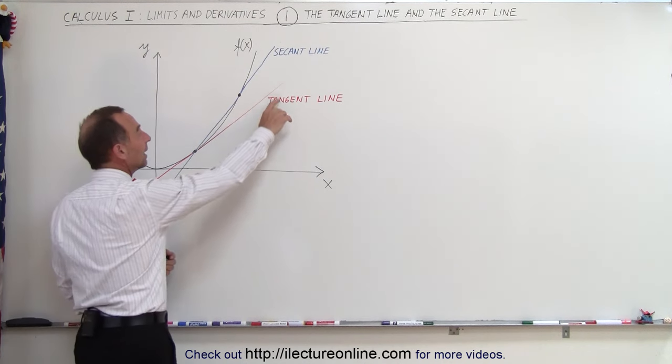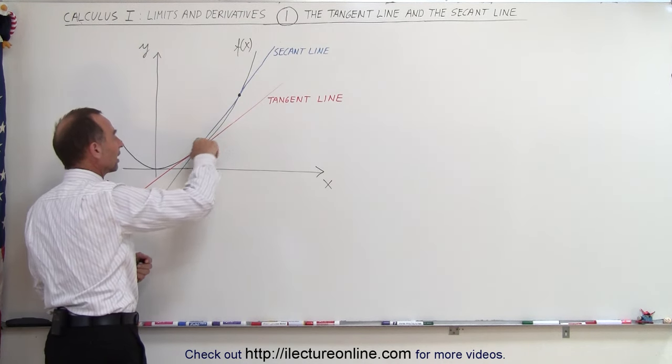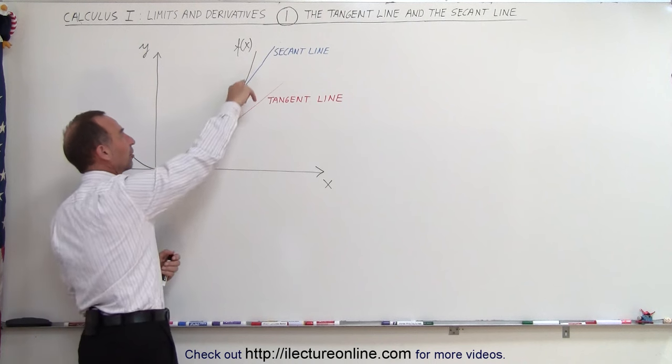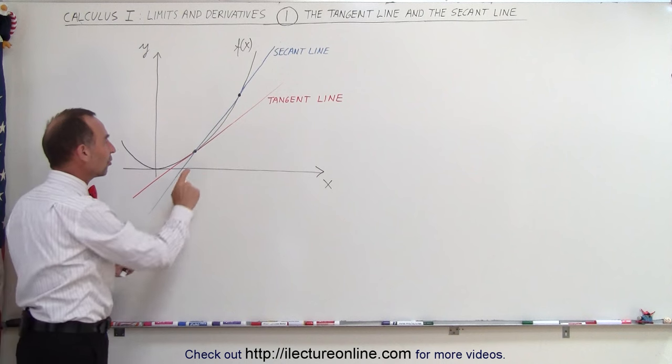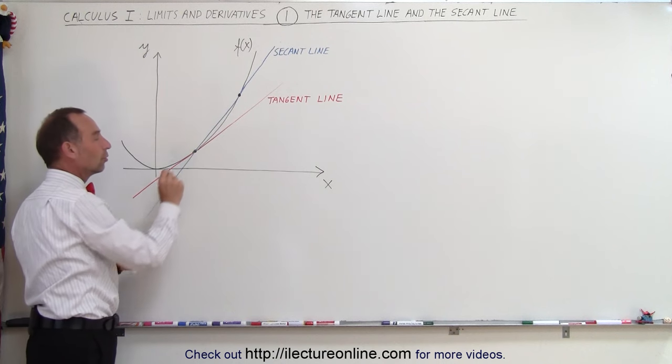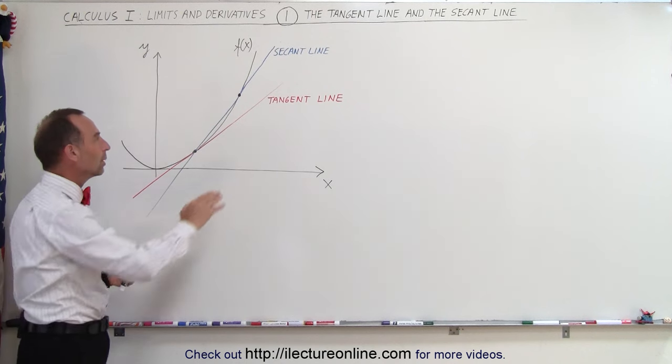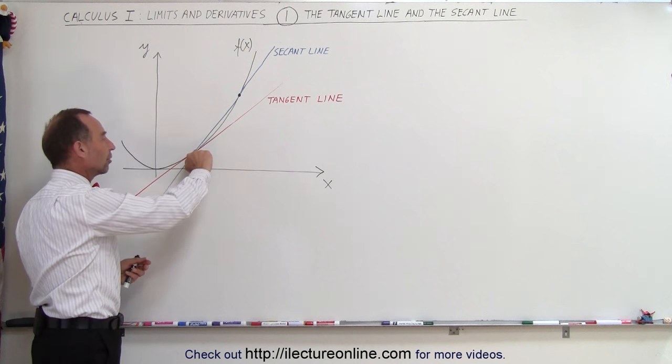Let's say that a tangent line is a line that runs along a function like this. Here the black line represents a function, let's say it's f of x. The tangent line is such a line that it touches the function at just one point only. So there's only one point in common between the tangent line and the actual function right here.